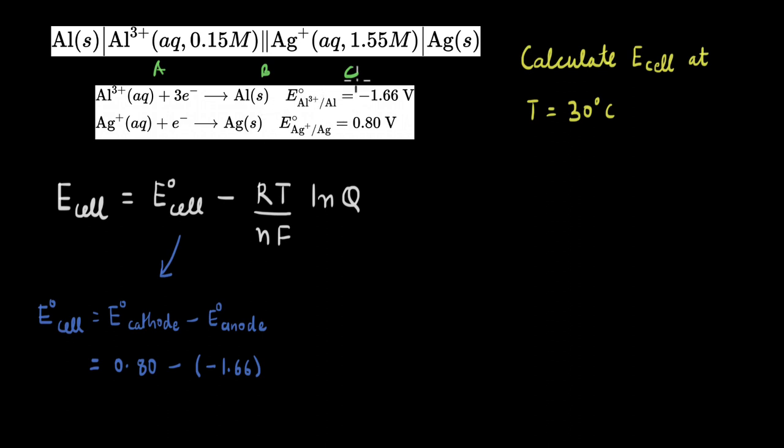The standard potential of the cathode, which is given here, is this positive 0.8 volt minus the standard potential of the anode, which is negative 1.66 volts. If we solve this, we get the standard cell potential to be equal to 2.46 volts. So, we know this value.